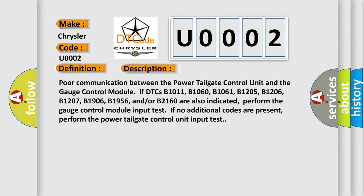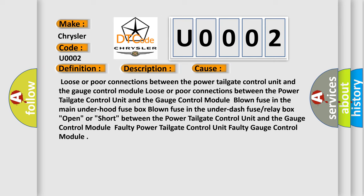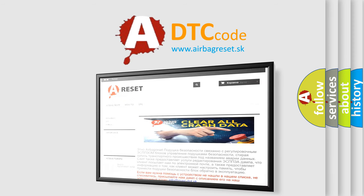This diagnostic error occurs most often in these cases: loose or poor connections between the power tailgate control unit and the gauge control module; a blown fuse in the main under-hood fuse box; a blown fuse in the under-dash fuse or relay box; an open or short circuit between the power tailgate control unit and the gauge control module; a faulty power tailgate control unit; or a faulty gauge control module. The Airbag Reset website aims to provide information in 52 languages. Thank you for your attention and stay tuned for the next video.